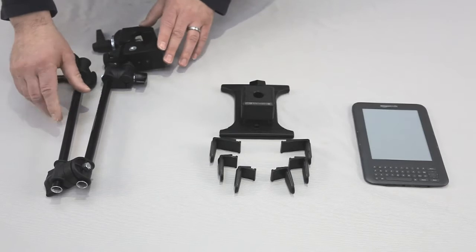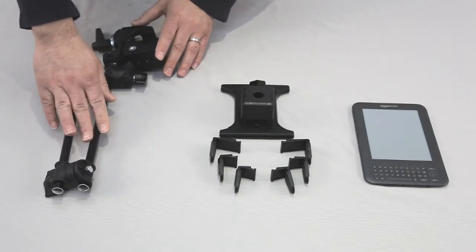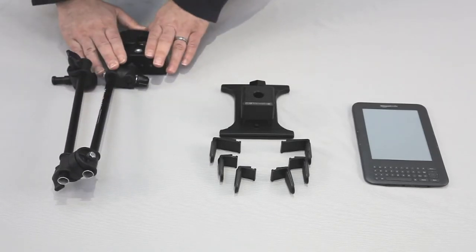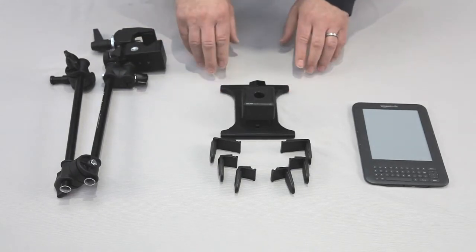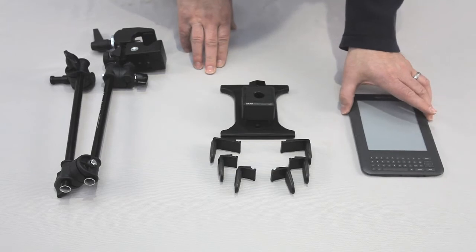You also get included with the mounting system are light duty magic arm and super clamp. So let me show you how to set this up. For our demonstration purposes, we are going to use a Kindle just to show you how to set that up.